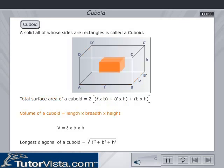Volume of a cuboid equals length times breadth times height. V = L × B × H.